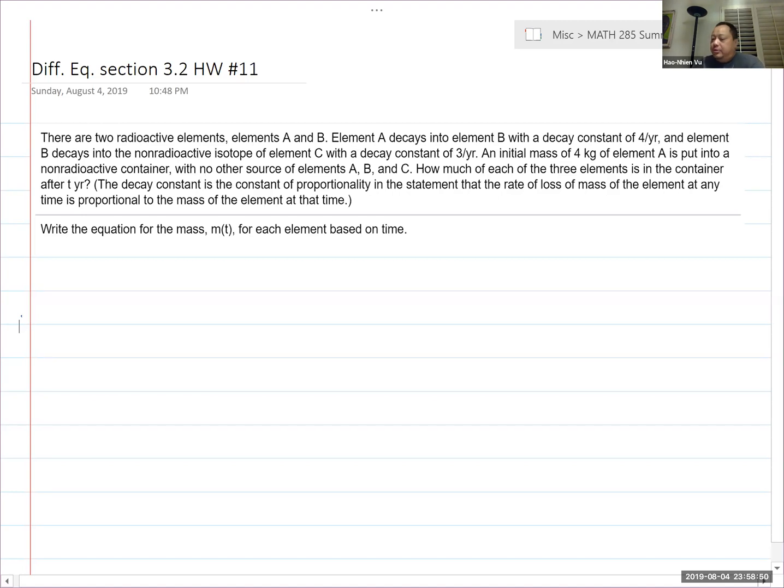The rate of loss is proportional to the mass by that K constant. Okay, so I'm going to define my variables: A(t), B(t), and C(t) will be the mass of A, B, and C respectively.